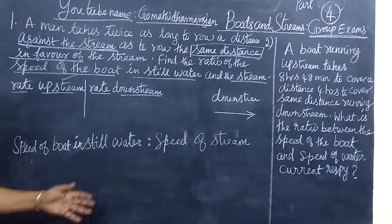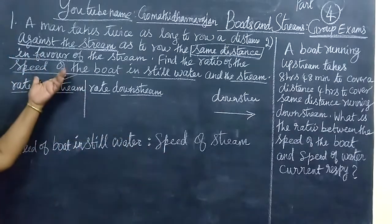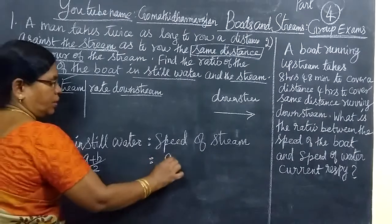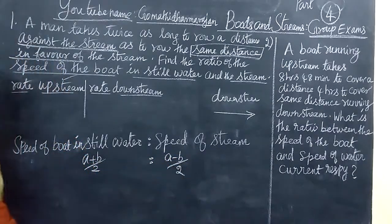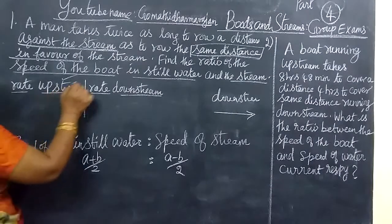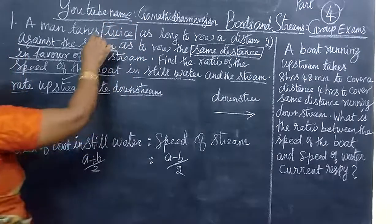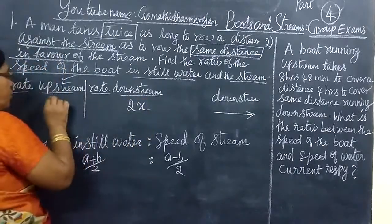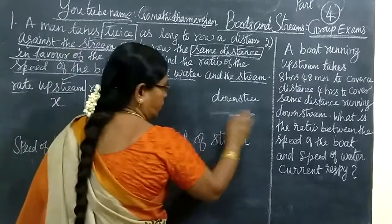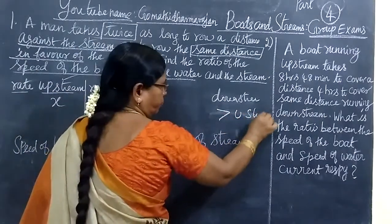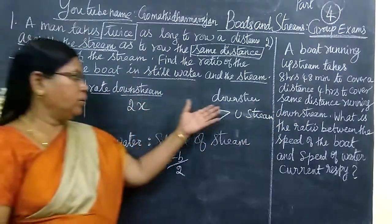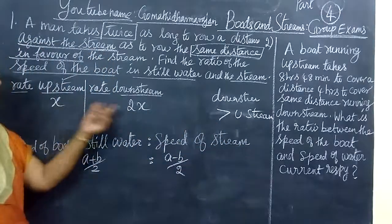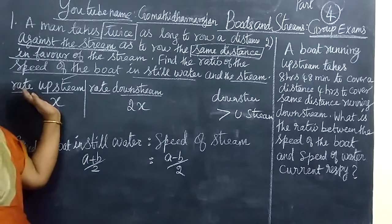Speed of the stream means speed of water. Speed of the boat in still water — this will be (A + B) / 2, and speed of the stream is (A − B) / 2. Downstream means more value; upstream means less value. Downstream speed is greater than upstream speed.